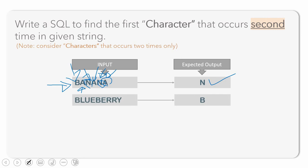Here is another string: 'blueberry'. There is a first occurrence of B and a second occurrence of B. There is a first occurrence of E and a second occurrence of E. Similarly, there are two occurrences of R. However, B is the character whose second occurrence appears first before any other character's second occurrence.